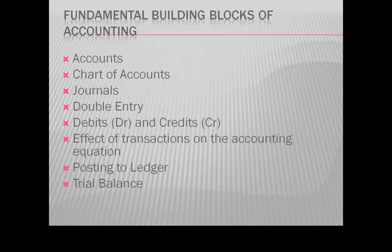Whether an item is a debit or a credit is determined by the accounting equation. The normal balance of an asset is a debit, the normal balance of a liability is a credit, and the normal balance of owner's equity is a credit. So if you want to indicate an increase in an asset, you record that as a debit. An increase in a liability is recorded as a credit, and an increase in owner's equity is also a credit. Once we have written our journal entry, we then categorize those items into their particular accounts by posting to the general ledger.